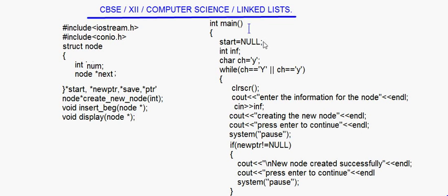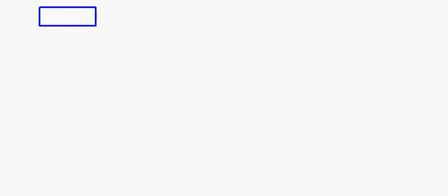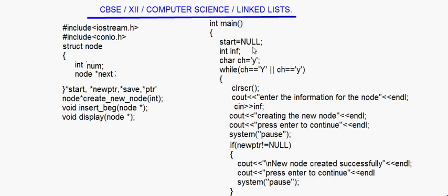Now let's come to the main function. First of all, start is initially equal to null — the linked list is empty. We declare int inf and char ch equal to 'y'. This is a loop for insertion: while choice equals 'y'. We clear the screen, enter the information for the node — the node contains int num — a number you are going to enter. Once that number is entered, we say 'creating the new node', then press enter to continue with system pause.